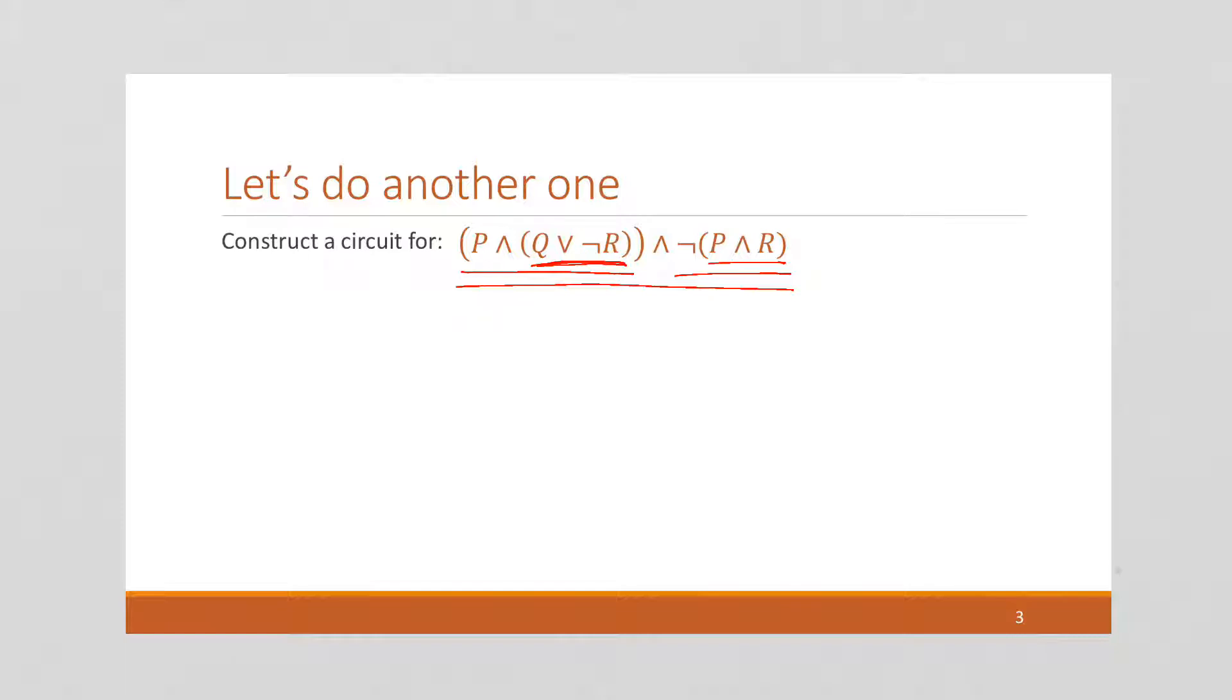So, to do this, I'm going to start as suggested, and I'm going to start with this one. Now, notice this has three variables: P, Q, and R. And at the moment, with this inner parenthesis, we're going to have a NOT R and a Q.